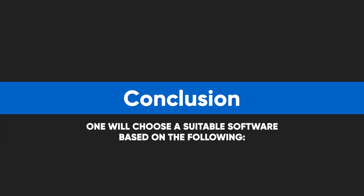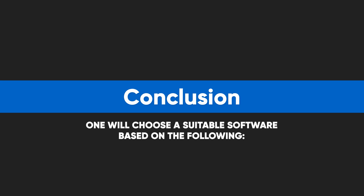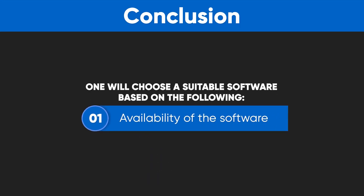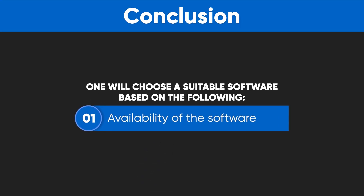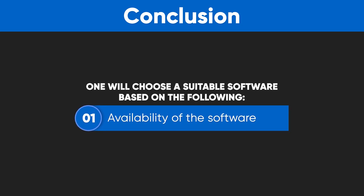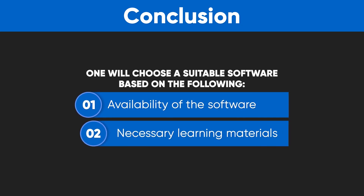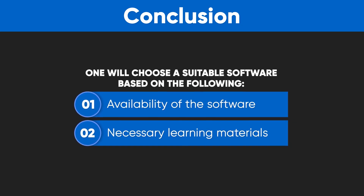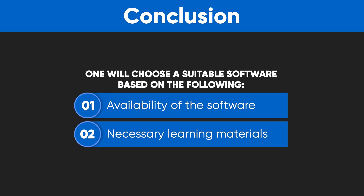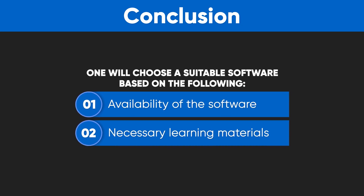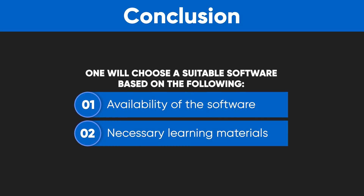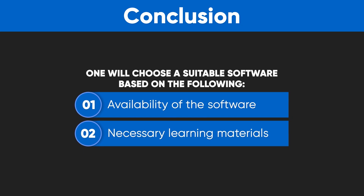In conclusion, what I have learnt in my journey of 3D graphics is that one will choose a suitable software based on the following. Number 1: Availability of the software — whether the software is ready to just be downloaded for free or if it is paid for. Number 2: Availability of necessary learning materials. If beginner tutorials and up-to-date documentation are easily accessible on the internet, then the learning process will be straightforward.